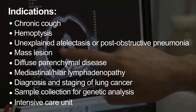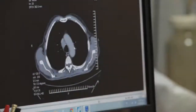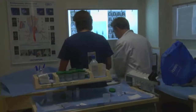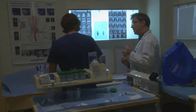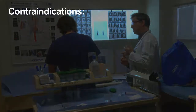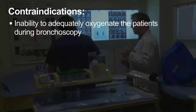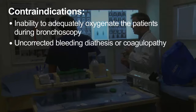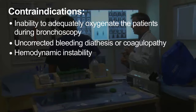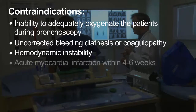In specific circumstances, it can be used in the intensive care unit. The contraindications to flexible bronchoscopy are mainly relative rather than absolute. A physician should carefully consider the potential benefit from the procedure, especially in patients with an inability to adequately oxygenate during the procedure, uncorrected bleeding disorders or coagulopathy, haemodynamic instability, or acute myocardial infarction within 4–6 weeks.